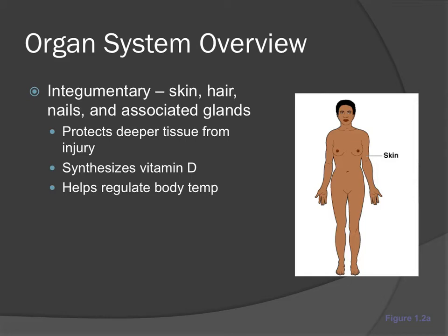The integumentary system also helps regulate body temperature. When your body is overheated, it sweats to cool down, maintaining core body temperature at approximately 98.6°F — that's reaching homeostasis. If you are too cold, your body shivers to warm up. Those two things — sweating and shivering — regulate our body temperature, and we do that through our skin.